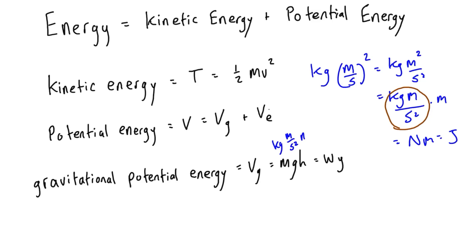Again we have this kilogram meters per second squared which is equal to newtons, and then times that meters which is equal to joules. Or if you've already converted mg to weight, then weight is in units of newtons and y is meters, so again joules.